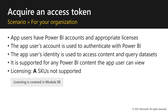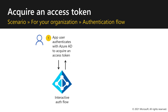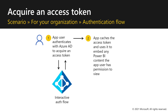So let's see how the authentication flow works. App users authenticate with Azure AD to acquire their access token in an interactive authentication flow. Once the Azure AD token is acquired, the app will cache this access token and use it to embed any Power BI content that the app user has permission to view.